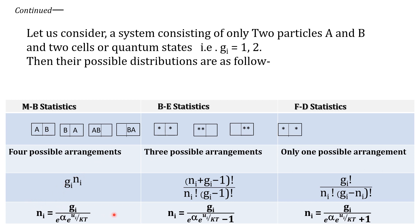What is the Maxwell-Boltzmann distribution law? Using the most probable condition, N_i equals G_i divided by e^α times e^(U_i / kT). For Bose-Einstein statistic, the distribution law is different: N_i equals G_i divided by (e^α times e^(U_i / kT) minus 1). While in Fermi-Dirac statistic, the Fermi-Dirac distribution law is: N_i equals G_i divided by (e^α times e^(U_i / kT) plus 1). Here 1/kT is a constant denoted earlier as β, where β equals 1/kT. Substituting the β value, we get these three results.